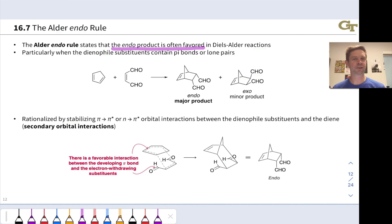To some extent, this is actually a little bit surprising, because the endo product seems more sterically hindered than the exo product. The CHO groups, or the substituents more generally, are on the same side as this carbon-carbon double bond, which seems more sterically crowded than being on the same side as just this one carbon-CH2 bridge. Nonetheless, the endo product is generally favored, and this is an observation known as the Alder endo rule.